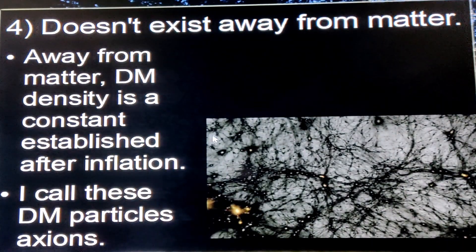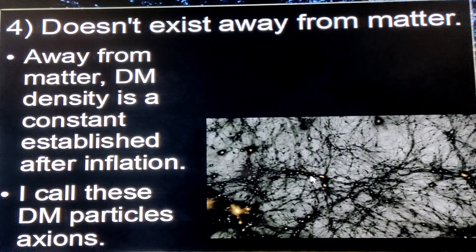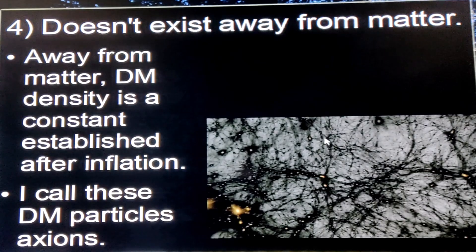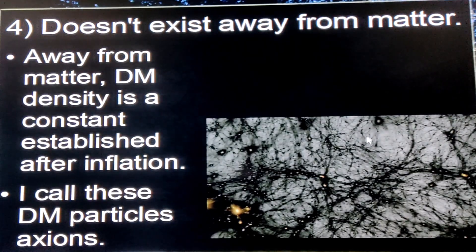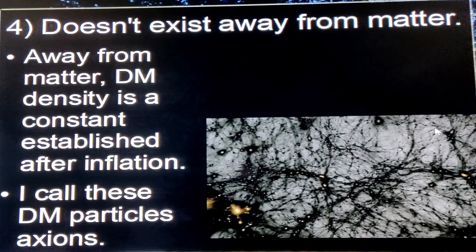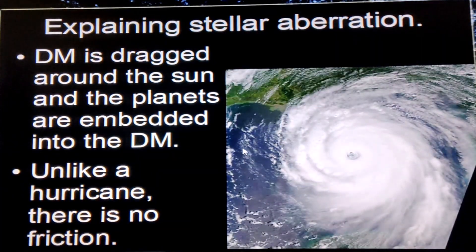Scientists have produced diagrams where yellow dots represent galaxies or groups of galaxies, and dark matter seems to follow filaments around them. They say dark matter is concentrated along these filaments, but outside of them there is no dark matter. Looking at the void regions between filaments, scientists say there is no dark matter there — but I'm saying there is dark matter there, just not as much.